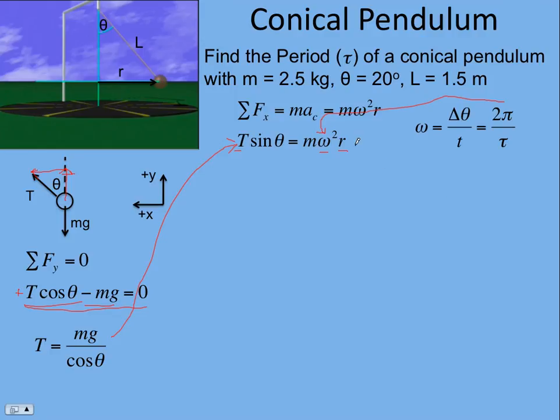And the radius wasn't given either, but that we can see we can get pretty easily from this triangle. They gave me the length. They gave me theta. The radius is opposite that. And so the radius would be L sine theta. So that's going to go into here.